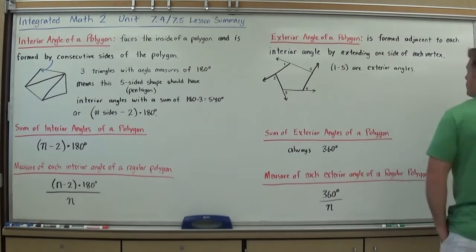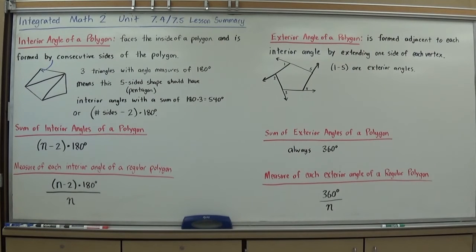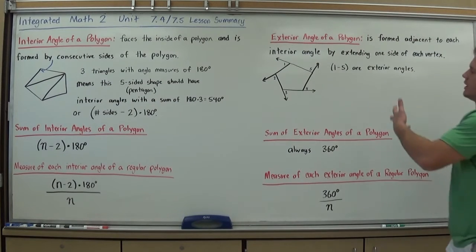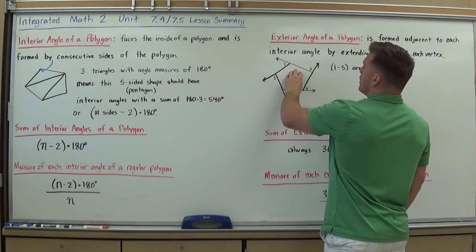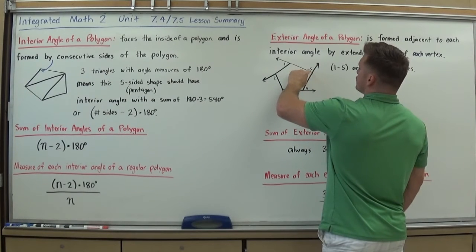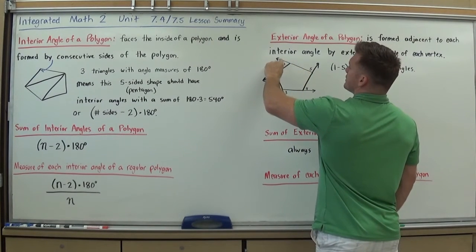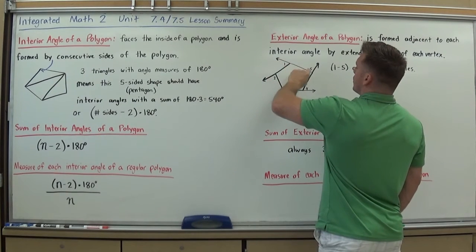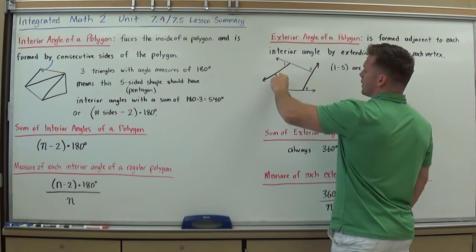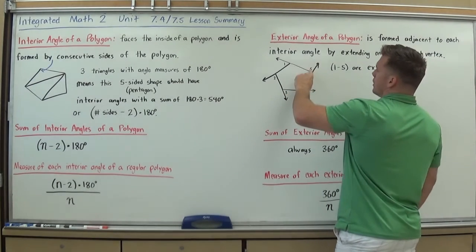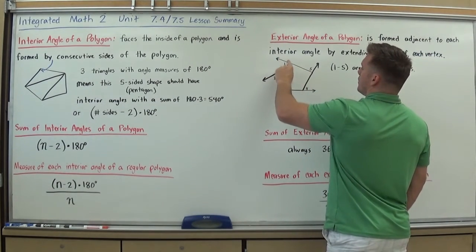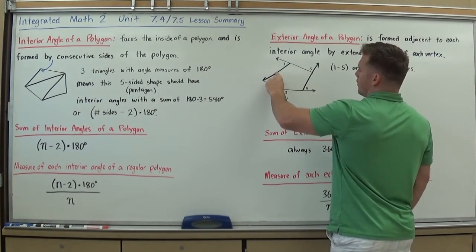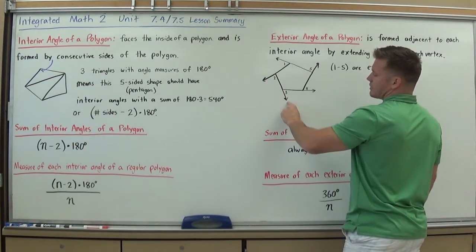When we look at exterior angles of a polygon, the exterior angle is formed adjacent to each interior angle by extending one side at each vertex. So if you take any polygon and draw it, then take one of the sides and extend it out with an arrow, you're creating an exterior angle. As long as you continue going in the same direction — on mine I went counterclockwise — it only goes out as a ray from each vertex, starting at one vertex and extending past the other.